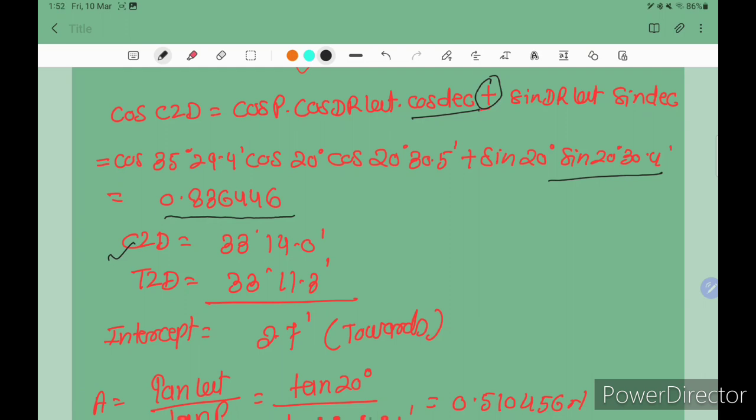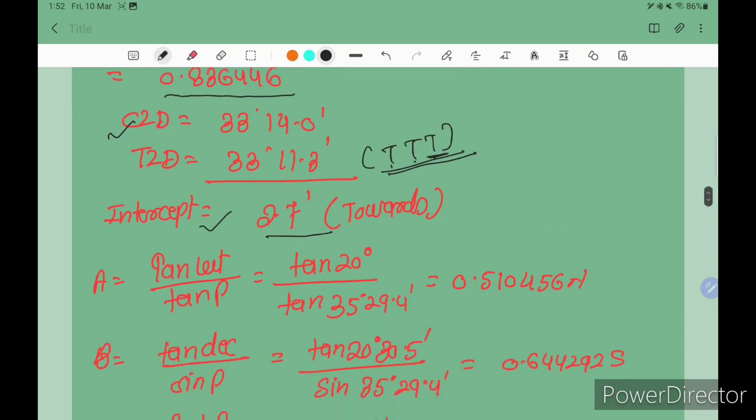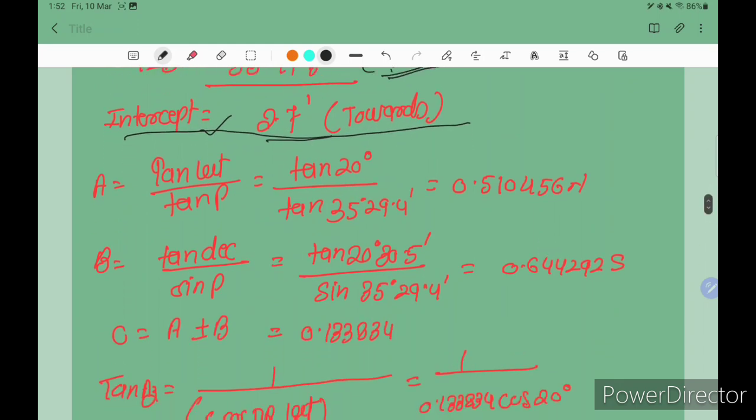We calculate cos CZD equals 0.83364, so CZD is 33 degrees 14.0 minutes. We have TZD is 33 degrees 11.3 minutes. So TZD is less than CZD, so True is towards. That means we get the intercept value towards 2.7 nautical miles.